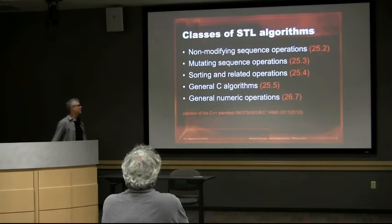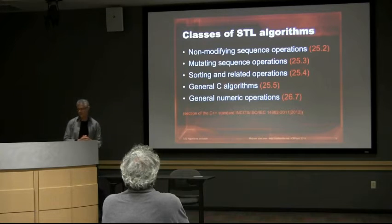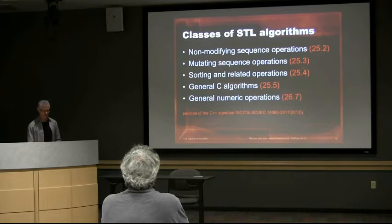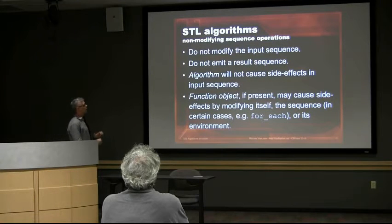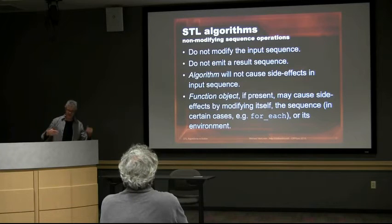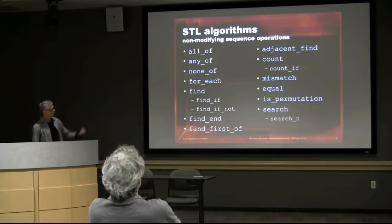For instance, a raw loop may just look like a loop with a bunch of code in it, but a set_intersection tells you exactly what you're trying to do. An algorithm contains side effects inside a clear interface and prevents accidental leakage. It eases reasoning about the functionality and is less likely to fail under non-obvious conditions. So what classes of STL algorithms do we have? From the C++ standard we have: non-modifying sequence operations, mutating sequence operations, sorting and related operations, general C algorithms, and general numeric operations.